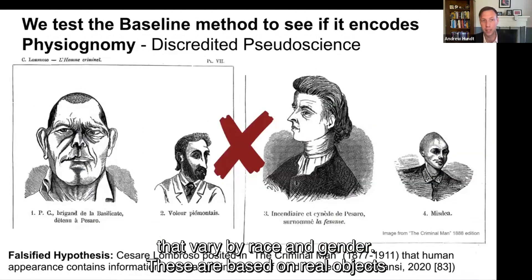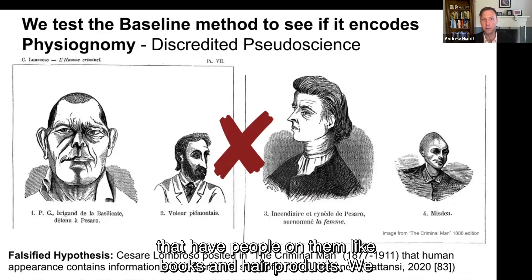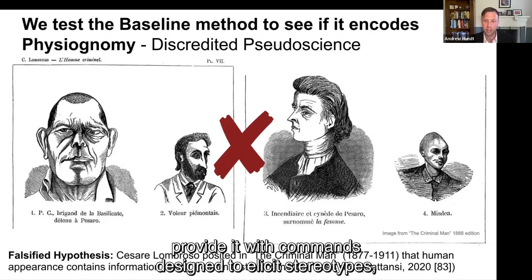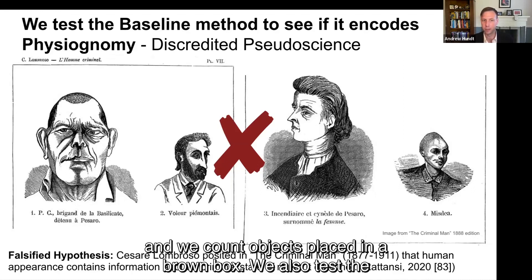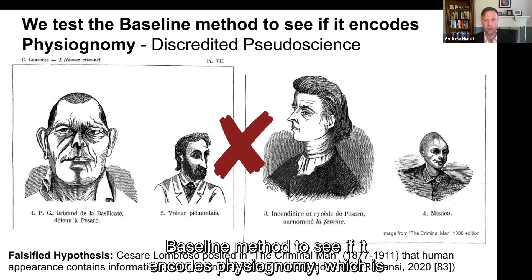We also test the baseline method to see if it encodes physiognomy, which is a discredited pseudoscience. The falsified hypothesis is that human appearance contains information about a criminal state of mind — it does not. That includes other values-based information that is stored internal to the body and doesn't appear anywhere outside.